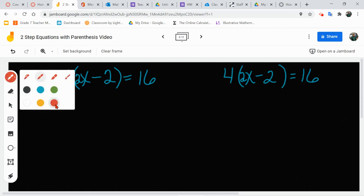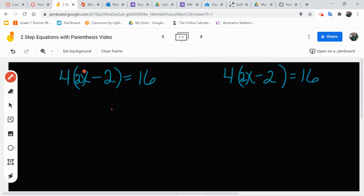Again, we can work these either way. We can decide that we're going to distribute the 4, which means multiply it to everything inside first, and then rewrite. 4 times 2x leaves me with 8x. 4 times 2 leaves me with minus 8 equals 16, all right?